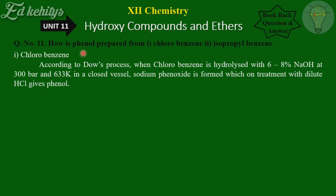How is phenol prepared from: first, chlorobenzene; second, isopropyl benzene? For chlorobenzene, according to the Dow process, when chlorobenzene is hydrolyzed with 6 to 8% sodium hydroxide at 300 bar pressure and 633 Kelvin in a closed vessel, sodium phenoxide is formed, which on treatment with dilute HCl gives phenol.